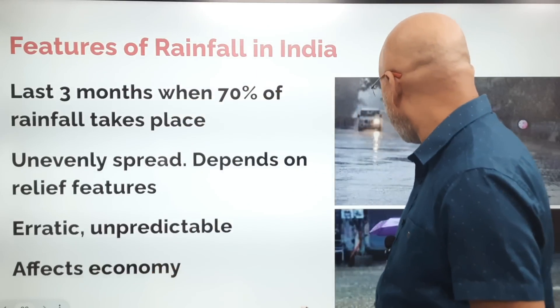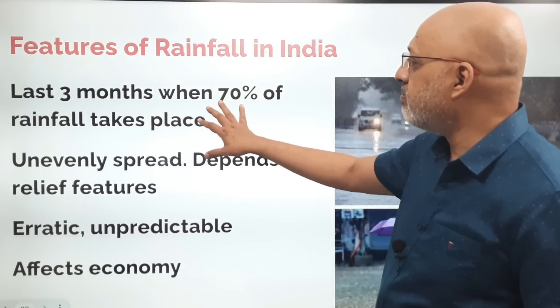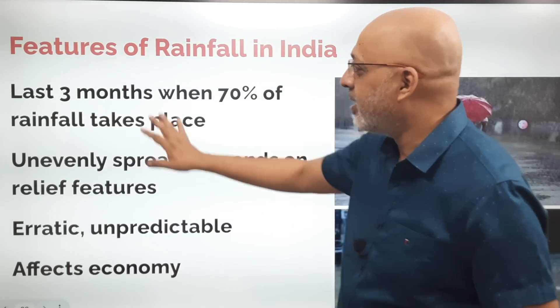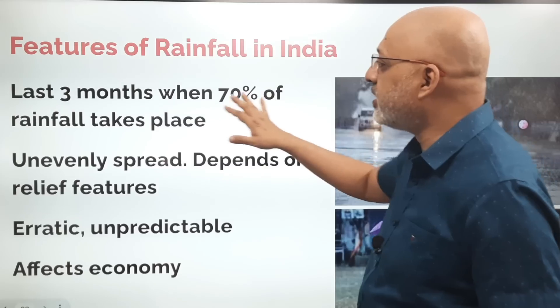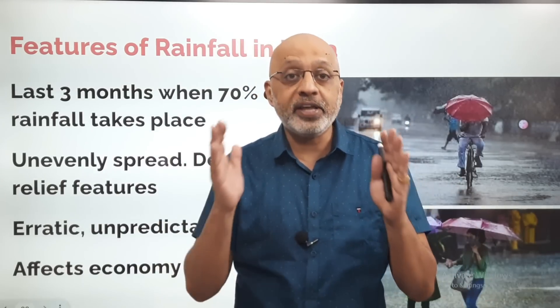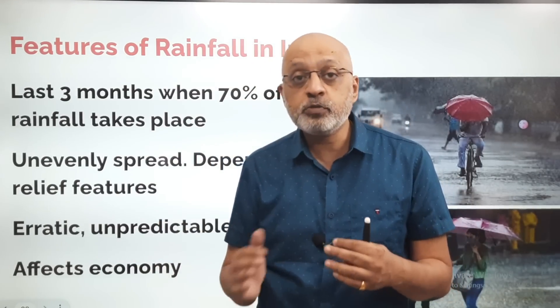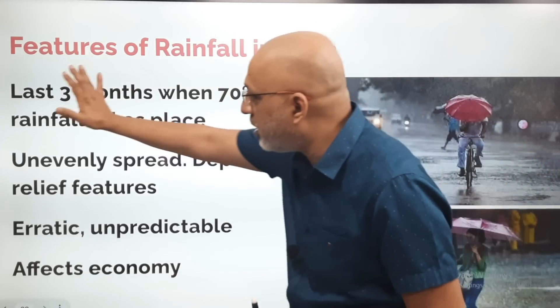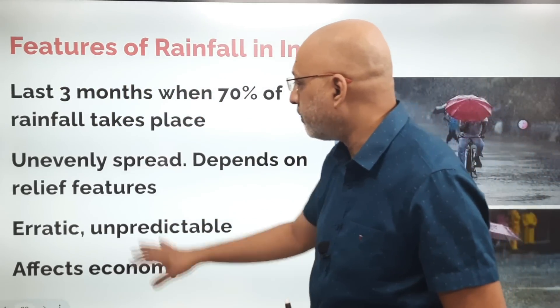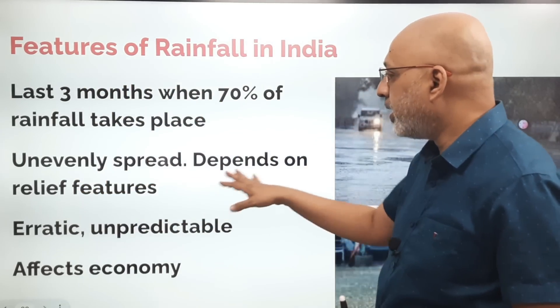The monsoon lasts three months, during which 70 percent of the rainfall takes place. Out of twelve months, essentially three months account for 70 percent of the entire rainfall in India, and the remaining nine months account for just 30 percent. So the monsoon season is the bulk of it — just three months. Even though it's known as a tropical monsoon climate, it is unevenly spread and depends on the relief features.